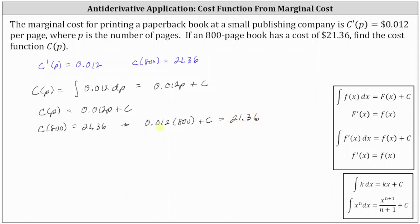Now we solve for C. 0.012 times 800 equals 9.6. Next, we subtract 9.6 on both sides. Simplifying, we have C, the constant of integration, equal to 21.36 minus 9.6, which is 11.76.